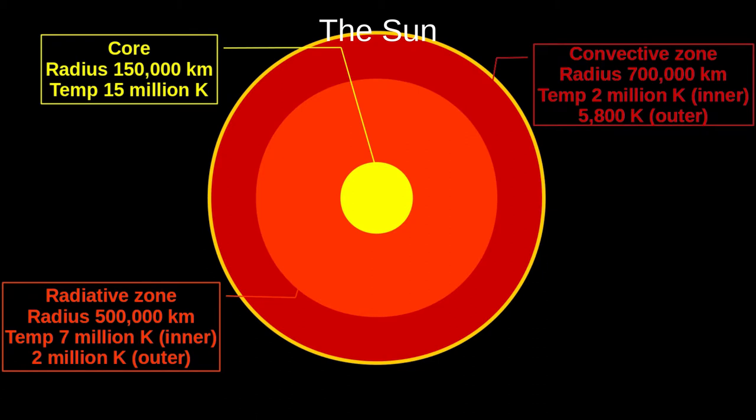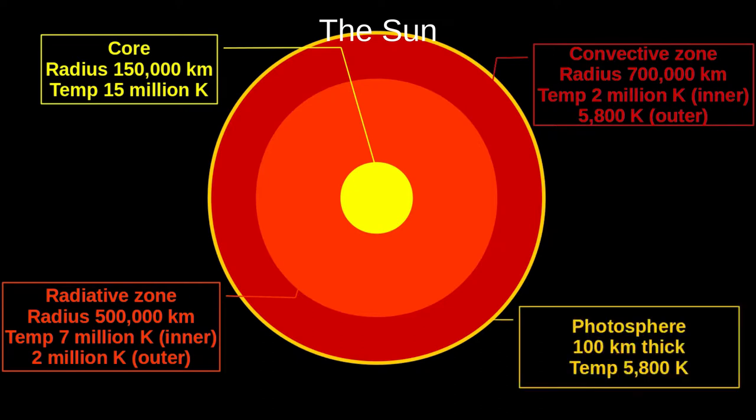Next we have the convective zone. Here, the plasma that makes up the Sun is too cool to allow radiation to work well, at only 2 million Kelvin in its inner parts, and a chilly 5,800 Kelvin at the outer edge. Instead, convection cells form, taking hot plasma upward, depositing its heat at the top, and travelling down again to collect more energy. And finally, for now, is the photosphere.